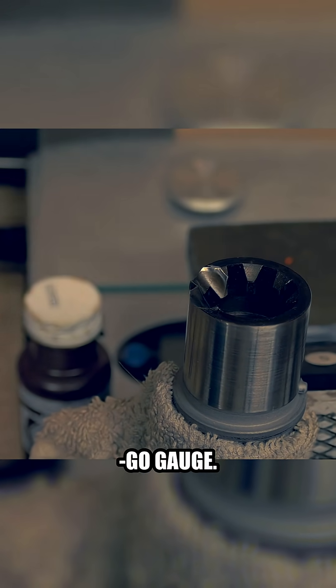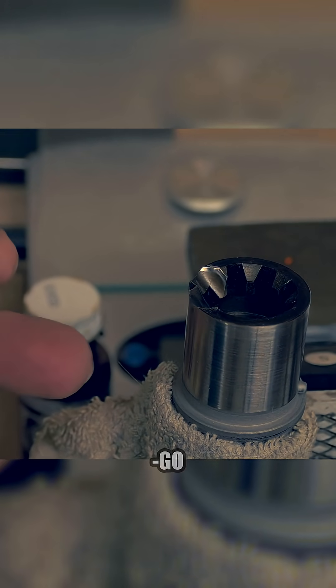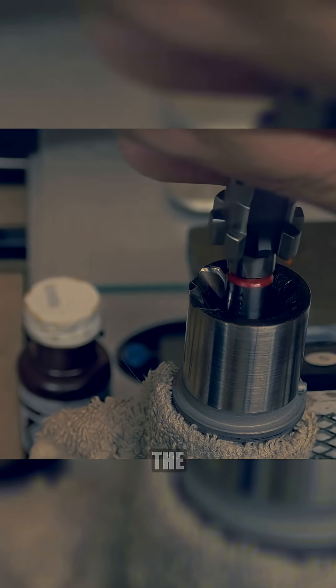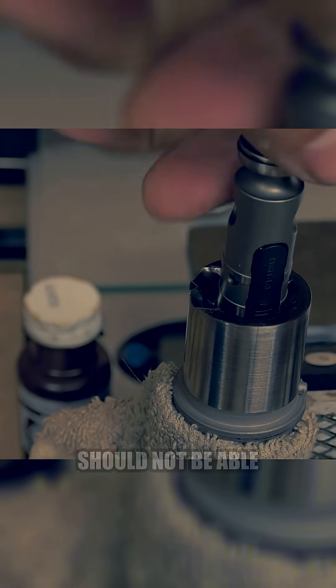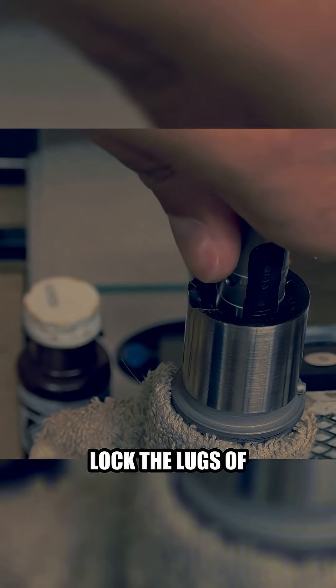Now I'm going to do the same for the no-go gauge. I'm going to put it in just like the go gauge, right? But with this one, with the gauge fully inserted like a round would be, I should not be able to lock the lugs of the bolt.